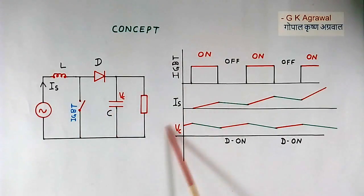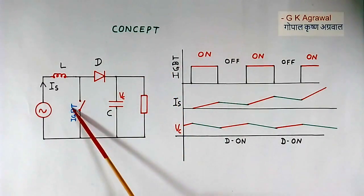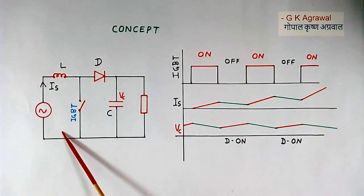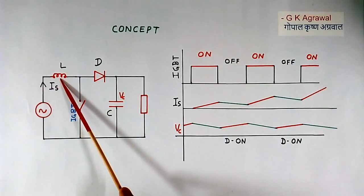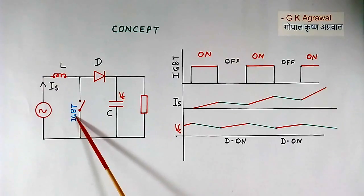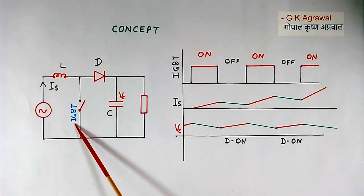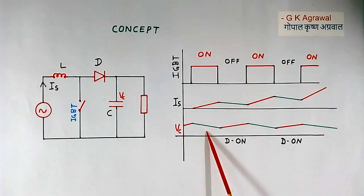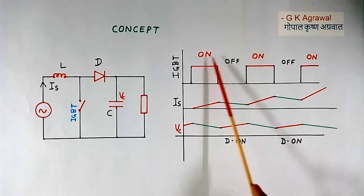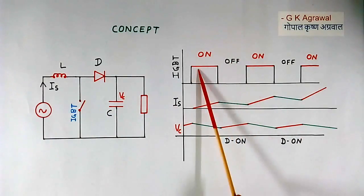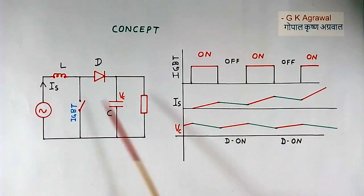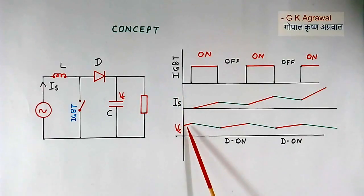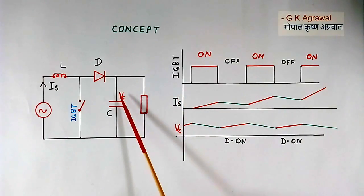Here I will explain the concept of how an IGBT can charge the capacitor. This is a simple circuit: AC supply, inductor, this IGBT shown here as a simple switch, a diode, capacitor, and a load. These plots show the ON-OFF status of this IGBT, the source current or inductor current IS, and VC, the voltage across the capacitor.